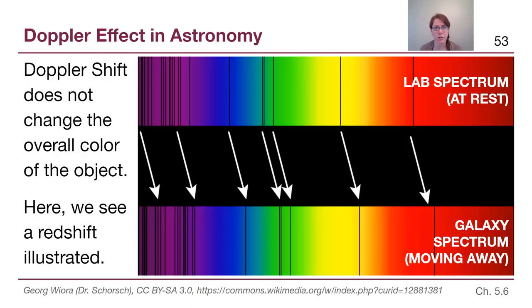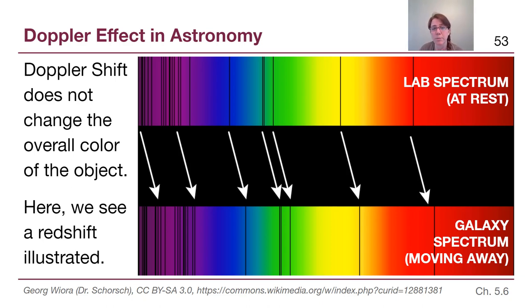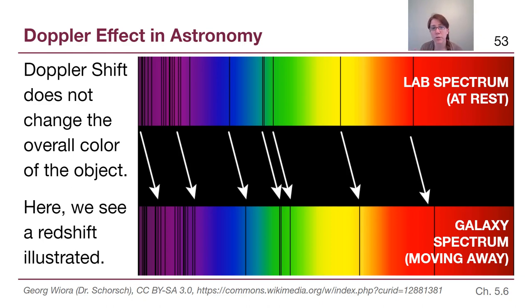One of the key misconceptions about the Doppler effect is that students tend to think blue shift means things will look blue and red shift means things will look red. These changes are small enough that Doppler shift does not change the overall color of the object we're looking at. For example, here we have a lab spectrum of all the wavelengths of spectral lines we know should exist, and then what we observe in a galaxy moving away from us — the overall pattern is very similar, but all of those lines have shifted to longer wavelengths towards the red end of the spectrum.